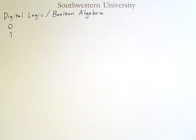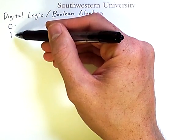Digital logic, or Boolean algebra, is a subfield of math that only allows variables to take on one of two values, zero or one.